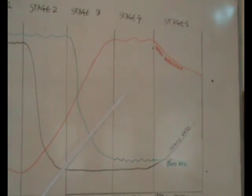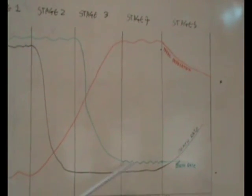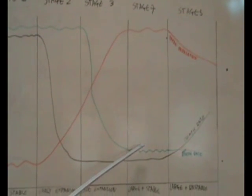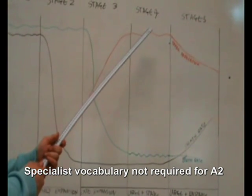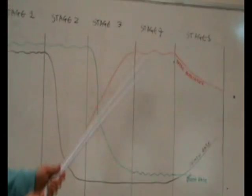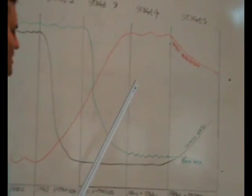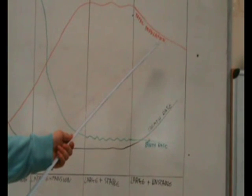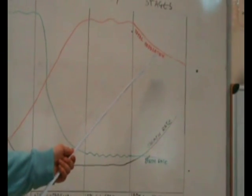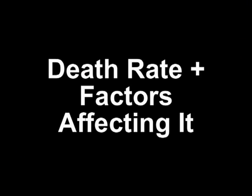In stage four, the birth rate and the death rate are pretty much constant and the total population is around a constant as well. In stage five, the death rate starts to increase and the birth rate stays the same, leading to a decline in the total population.